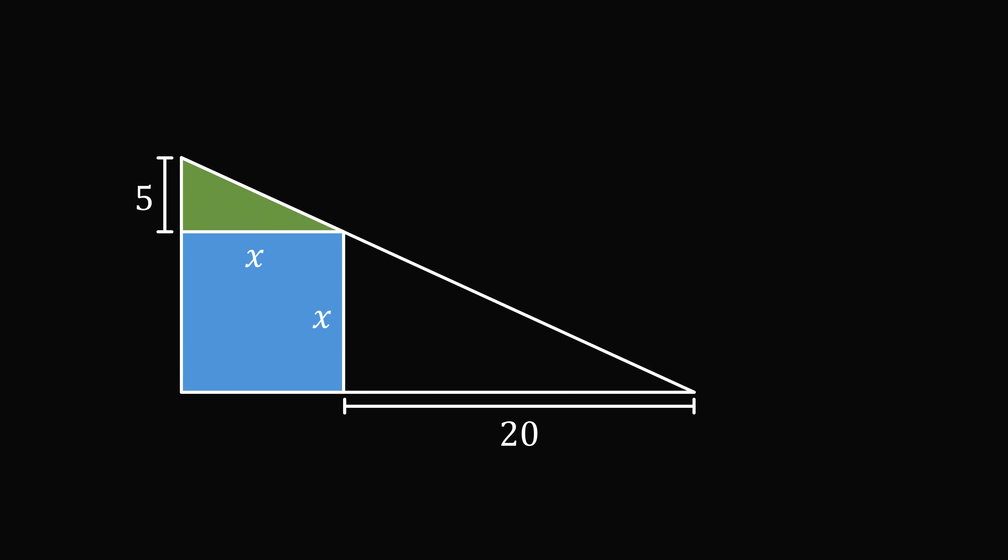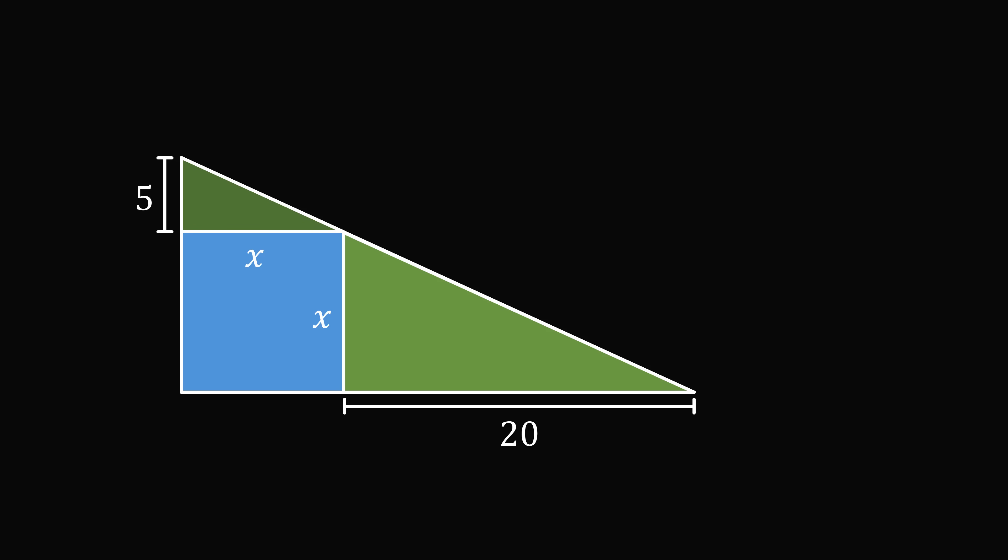Now this upper triangle has exactly the same three angles as the entire triangle and this lower triangle. So this upper triangle is similar to this lower triangle. That means the ratio of corresponding sides is the same between these two triangles.